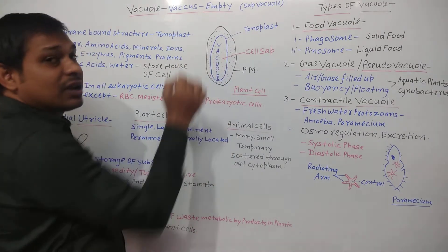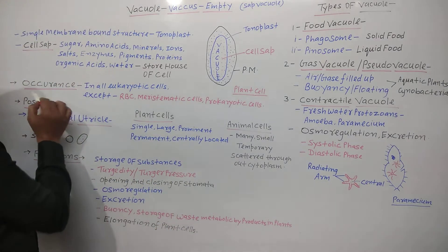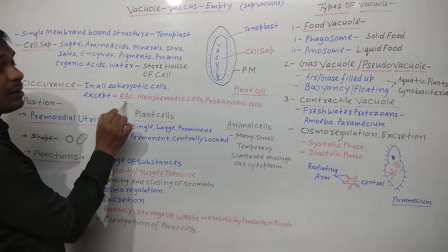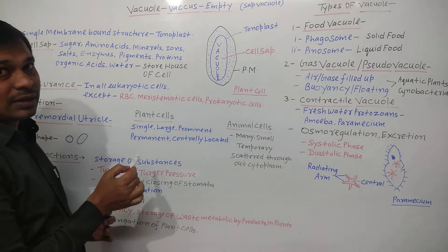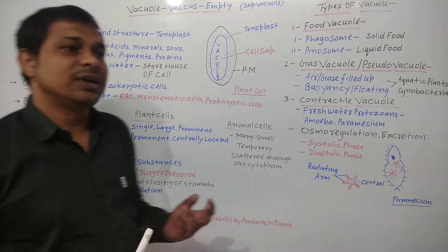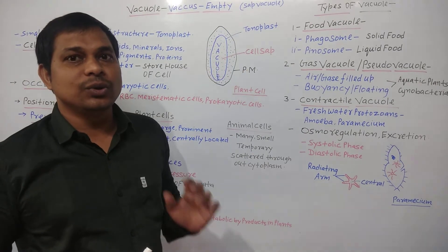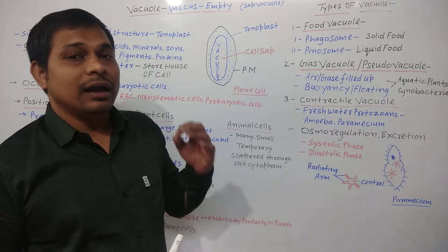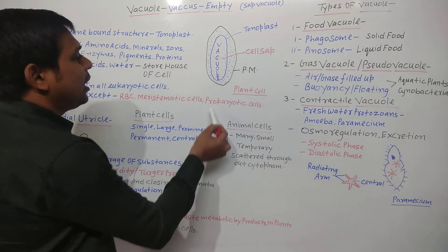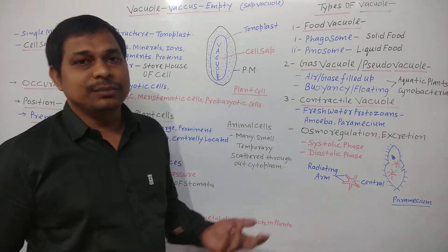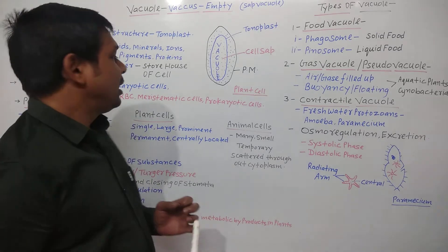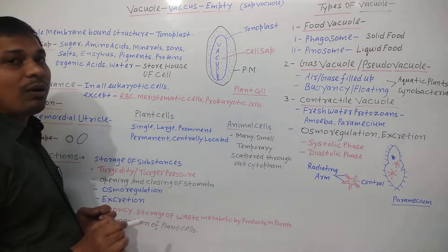Vacuoles are present in all eukaryotic cells, except in mature mammalian RBCs (erythrocytes), meristematic cells of plants — which are present at the root tip and shoot tip and have a very fast power of cell division — and prokaryotic cells like bacterial cells, archaebacterial cells, and mycoplasma (PPLO — pleuropneumonia-like organisms). These cells do not have vacuoles.